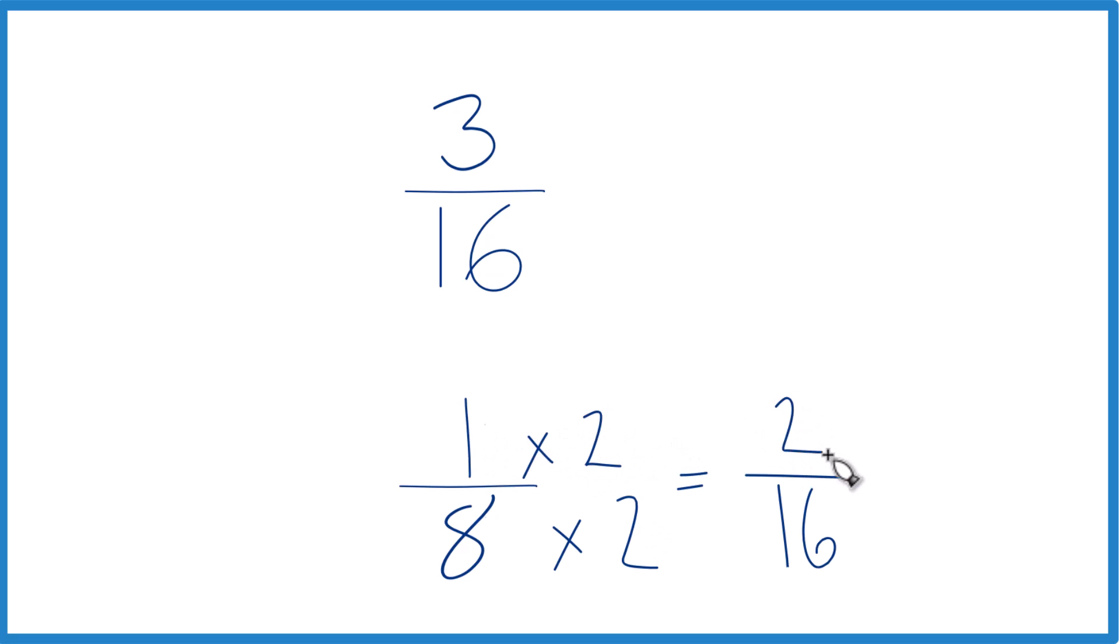1 times 2 is 2, and 2 16ths and 1 8th, they're the same thing, but now we have the same denominators. So let's just call this 3 16ths, since we already have 16 in the denominator. And these are the same.